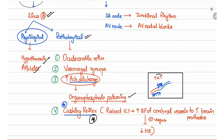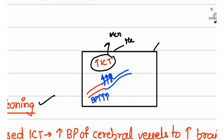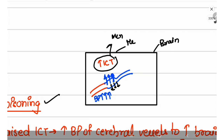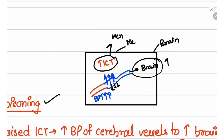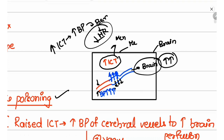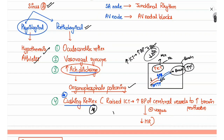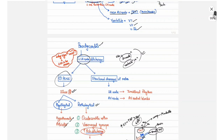The Cushing reflex occurs when there is raised intracranial pressure (ICP) due to causes like meningitis or hemorrhage. Increased ICP compresses blood vessels perfusing the brain, reducing the pressure gradient and decreasing brain perfusion. To compensate, vasoconstriction occurs, increasing hydrostatic pressure to push more blood to the brain, causing hypertension. This elevated blood pressure activates baroreceptors, which decrease the heart rate. The resulting triad — raised ICP, hypertension, and bradycardia — along with irregular breathing from compression of the medullary respiratory center, is the Cushing reflex.